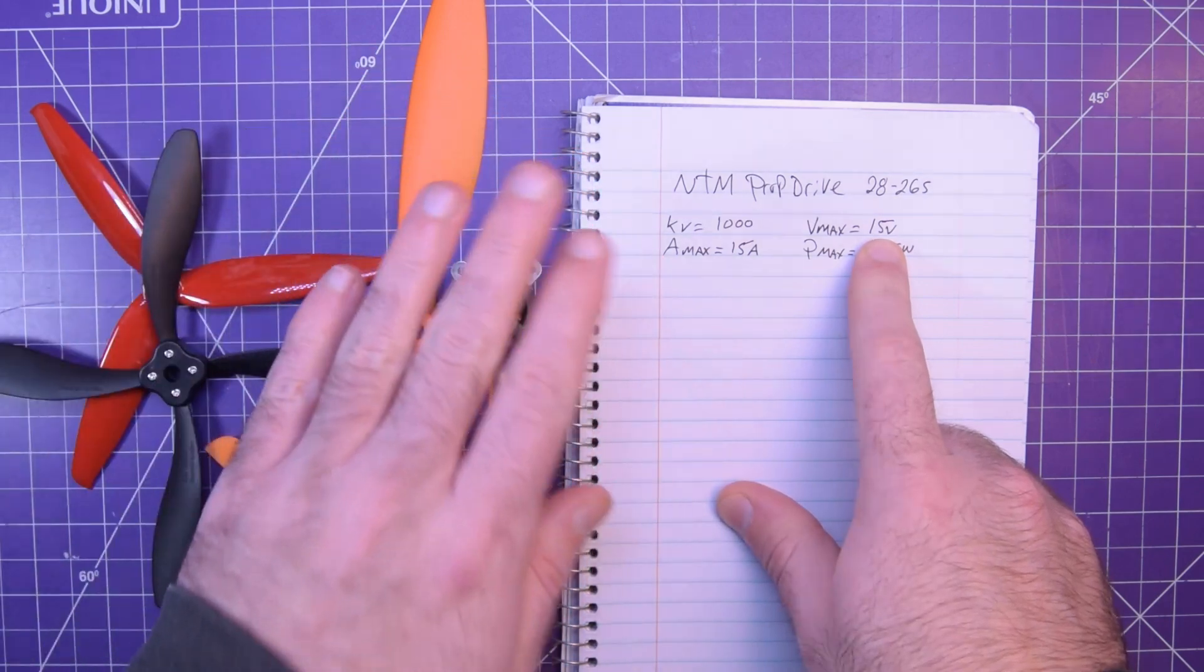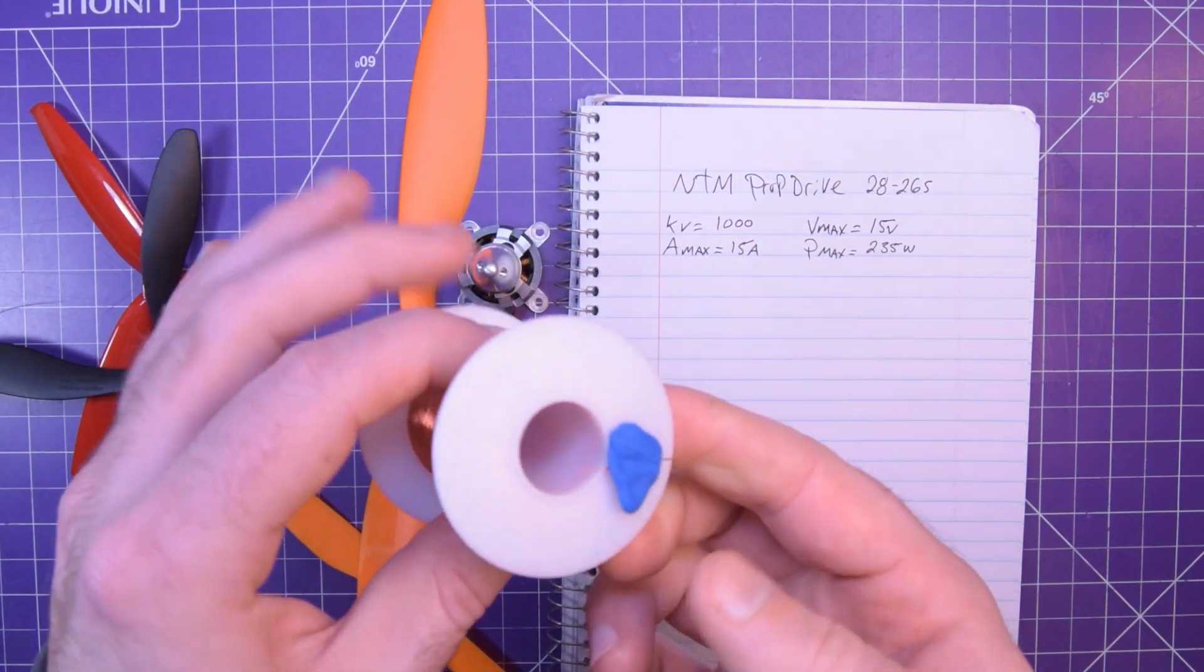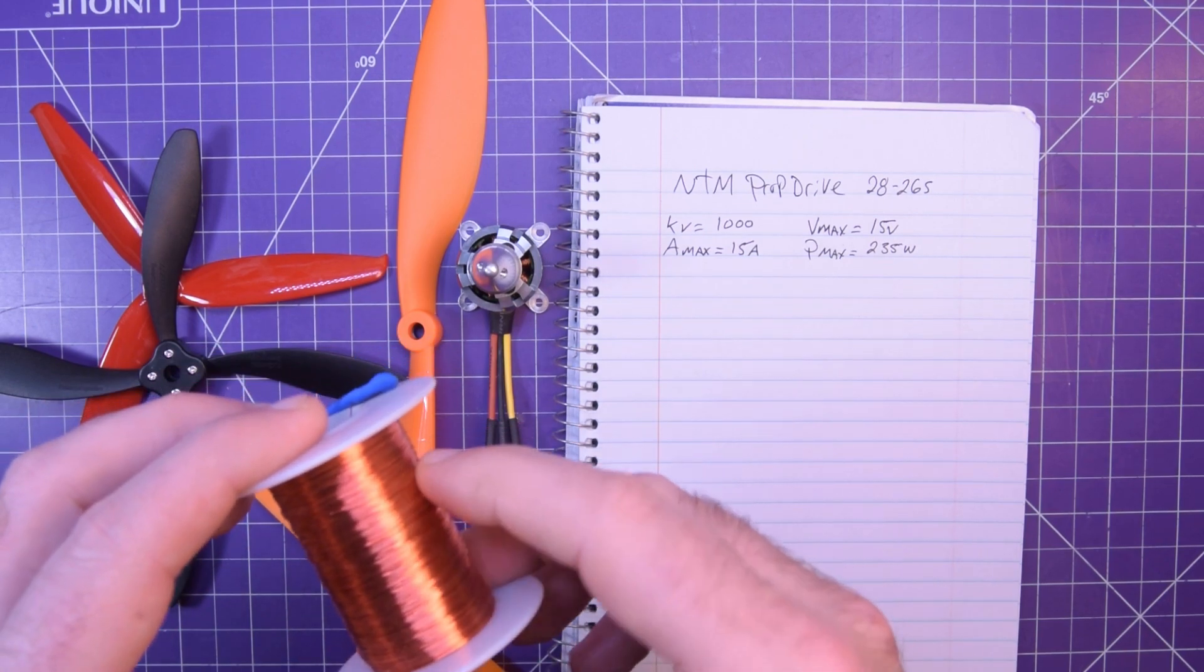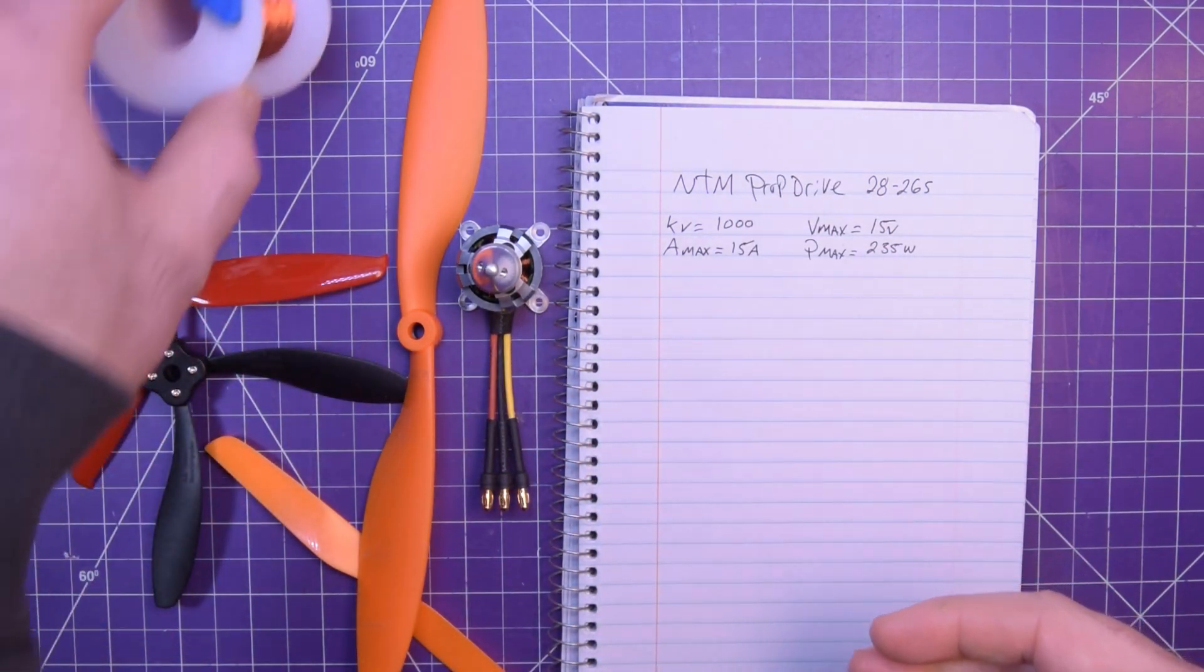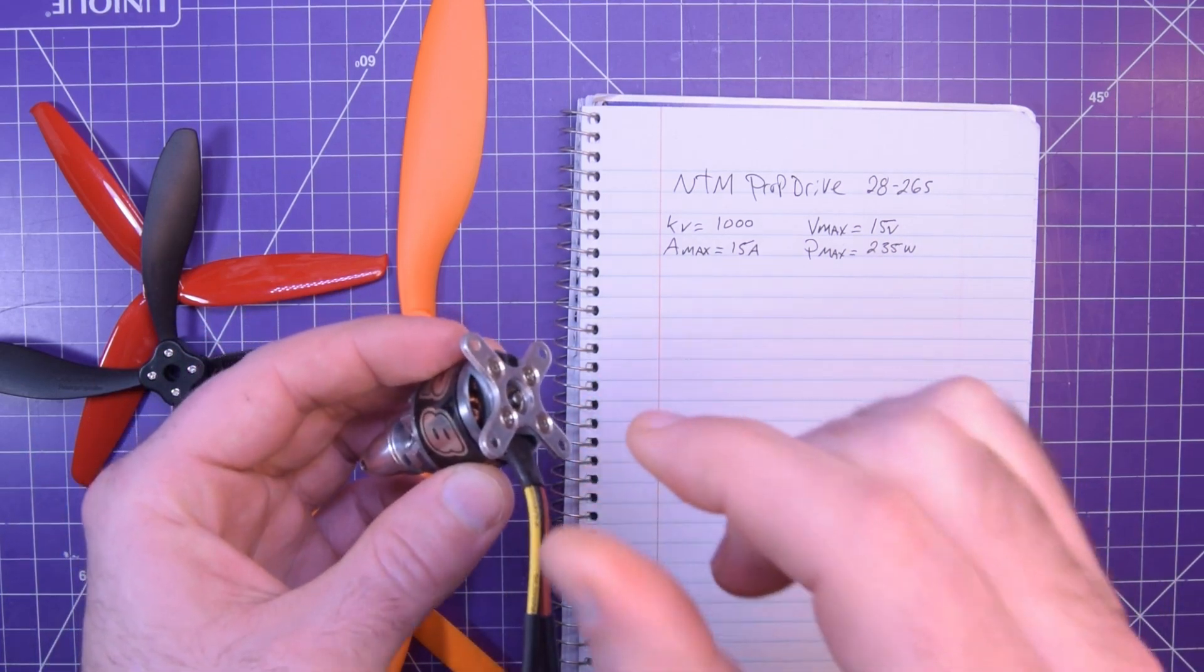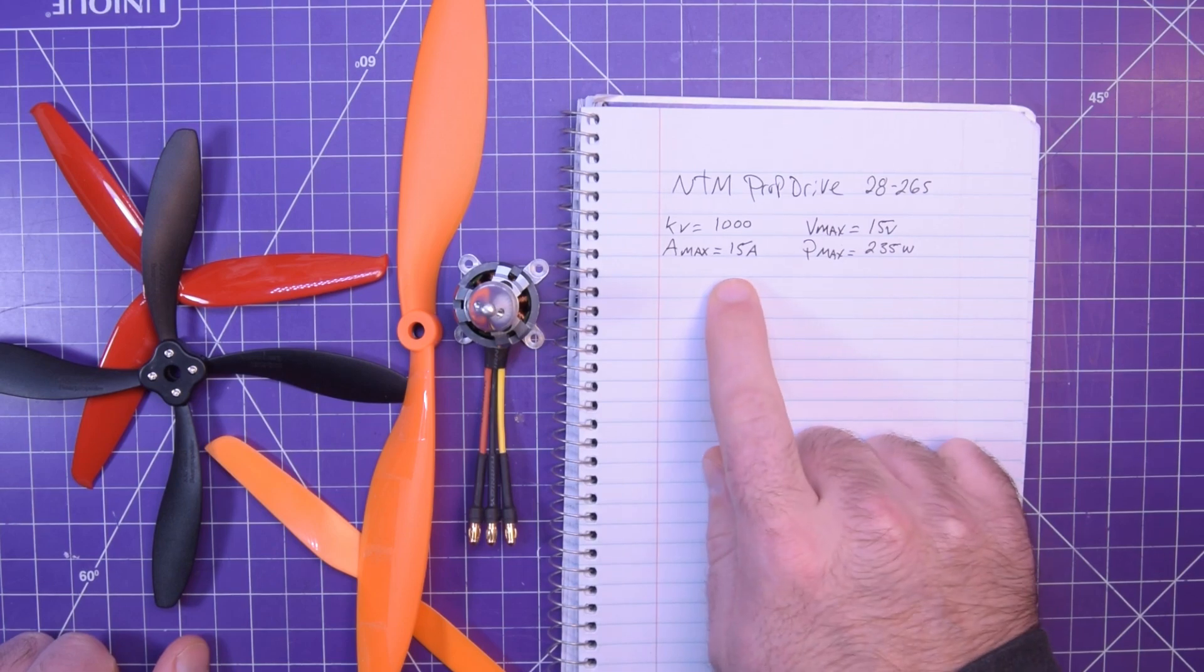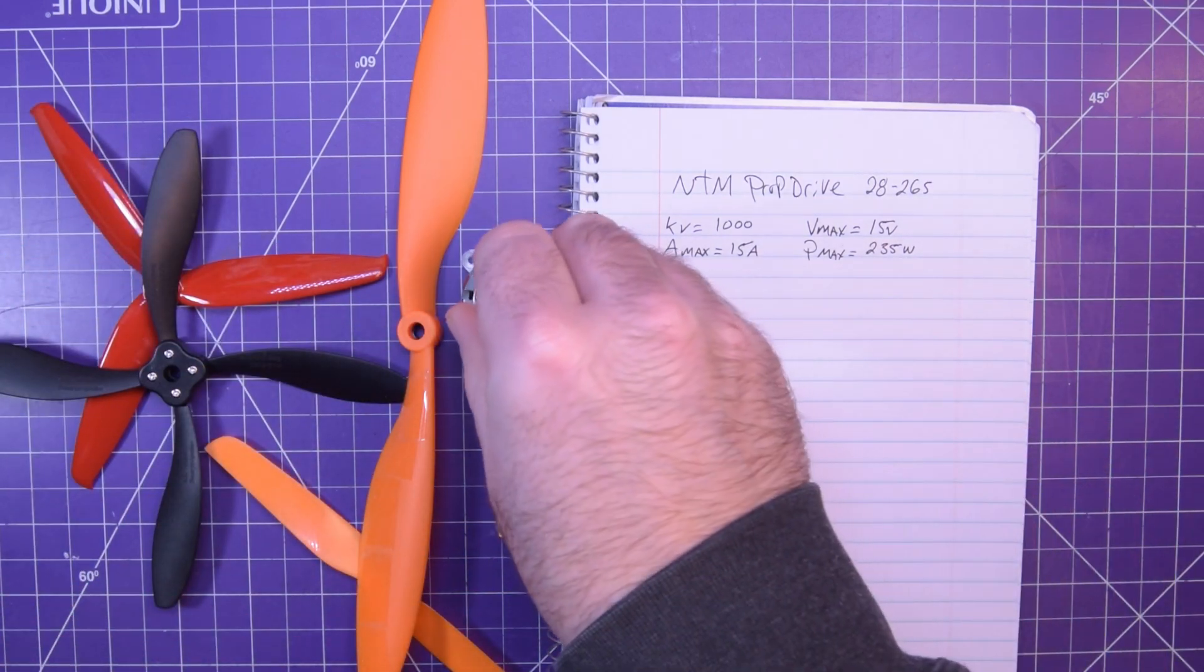The voltage maximum that you can apply to this motor is 15 volts and that's a factor of the insulation of the magnet wire inside. The magnet wire is copper wire coated with a varnish. The thickness of that varnish dictates its insulation qualities, and anything over 15 volts risks breaking down the insulation and shorting the winding to its neighbor. And if that happens you lose efficiency. The current maximum on this one is 15 amps and that's a function of how thick the diameter of that magnet wire is.